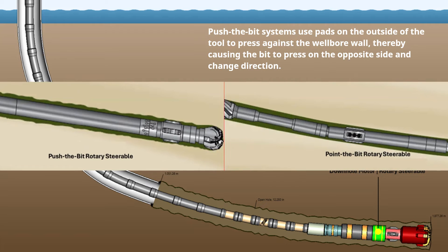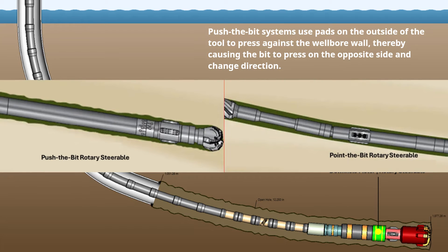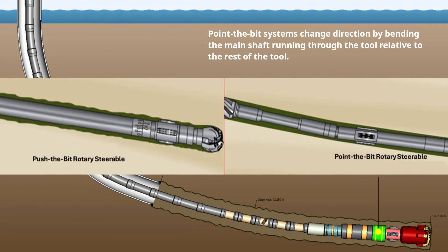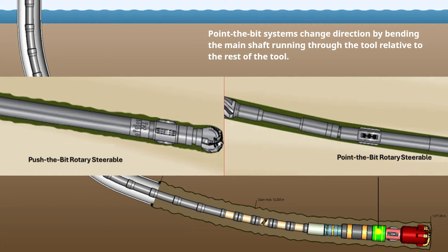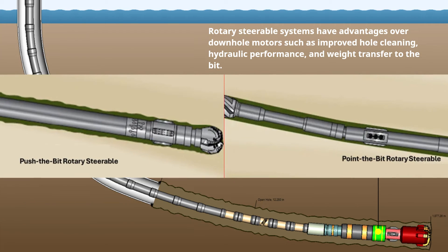Push-the-bit systems use pads on the outside of the tool to press against the wellbore wall, causing the bit to press on the opposite side and change direction. Point-the-bit systems change direction by bending the main shaft running through the tool relative to the rest of the tool. Rotary steerable systems have advantages over downhole motors such as improved hole cleaning, hydraulic performance, and weight transfer to the bit.